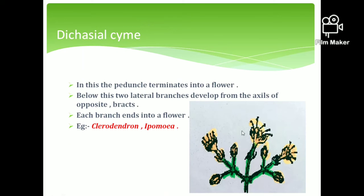The next one is dichasial cyme. In dichasial cyme, the main axis terminates in a flower, and from that flower, two lateral branches arise on opposite sides. These two lateral branches also terminate in flowers, forming opposite branching. This pattern of opposite branching continues in the dichasial cyme.